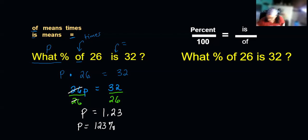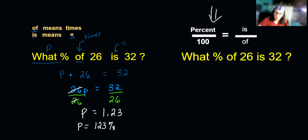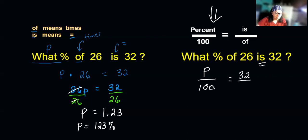Now let's look at the other method. You can see up here I have: percent over 100 equals is over of. So I've got a proportion, and that's how we're going to solve it this time. Percent — we don't know it, so I'll put P there. It's always over 100. Whatever comes after the 'is' goes on top: is 32, so 32 goes on top. Of 26 — the 'of' goes on the bottom.